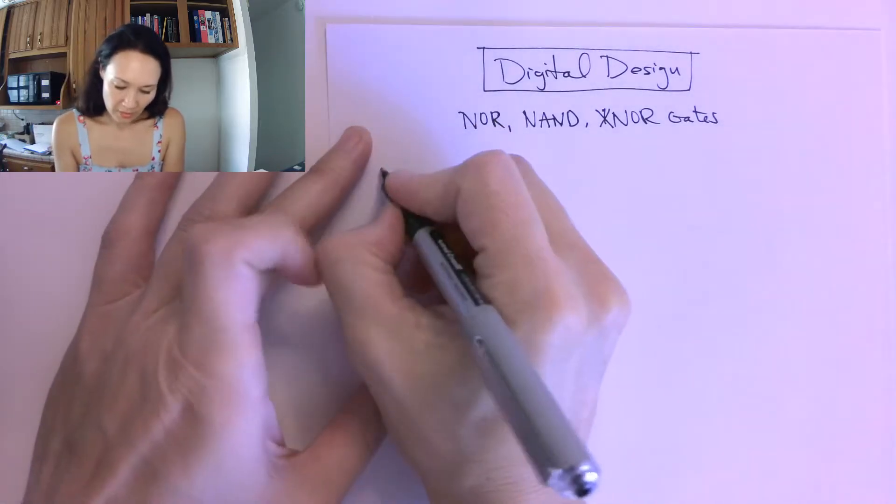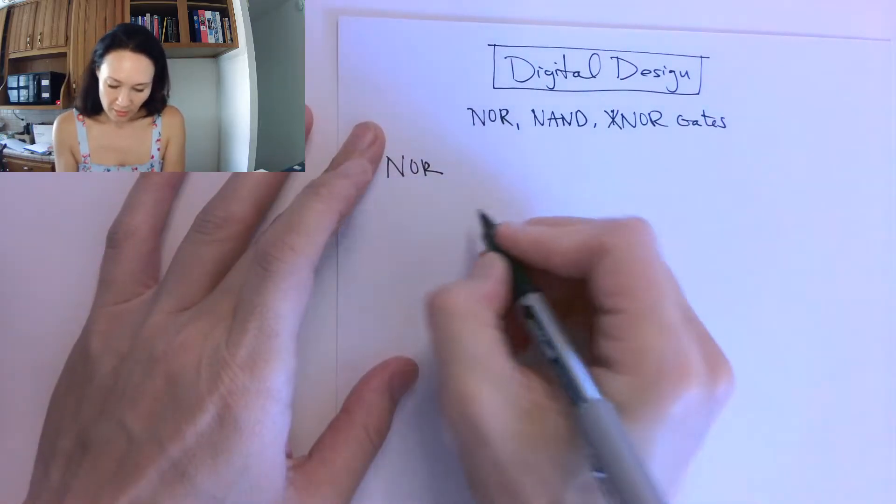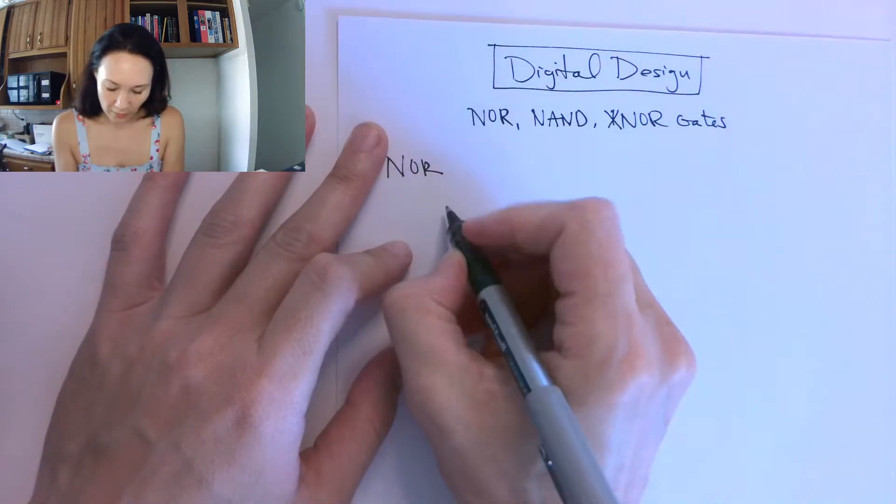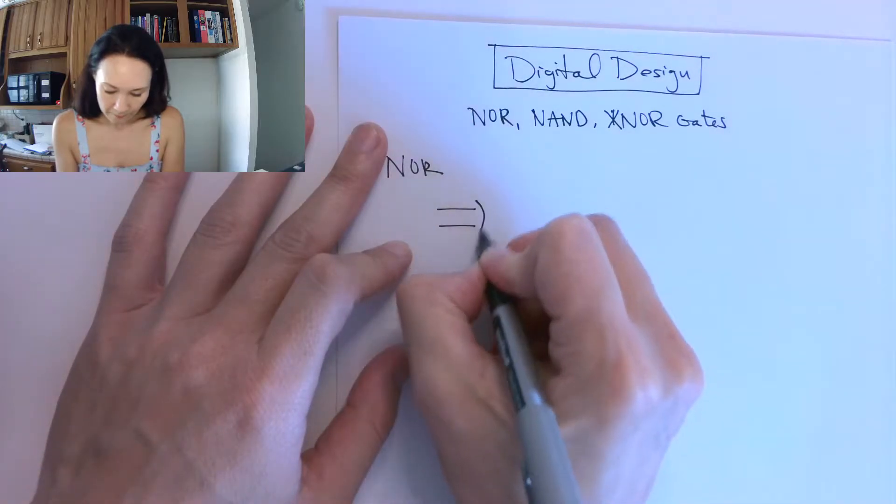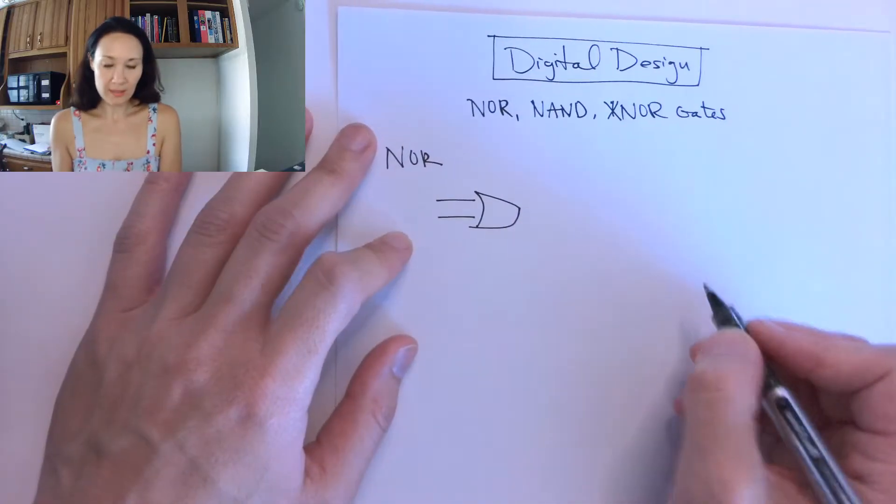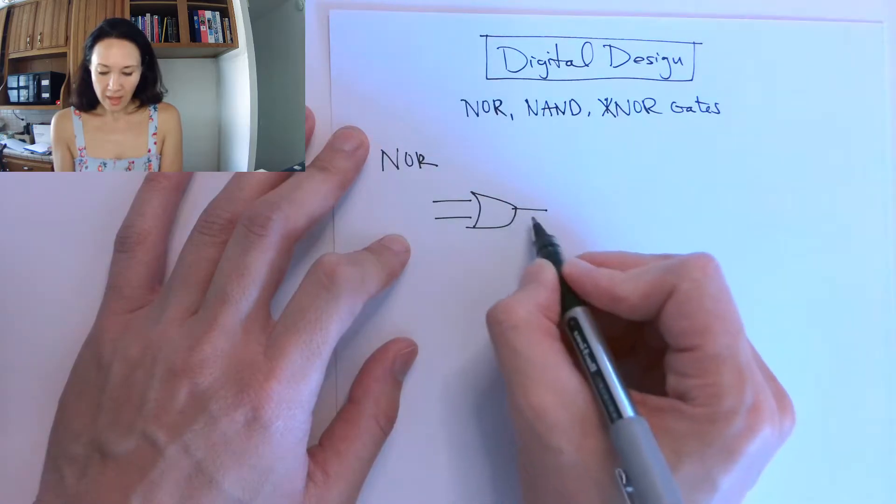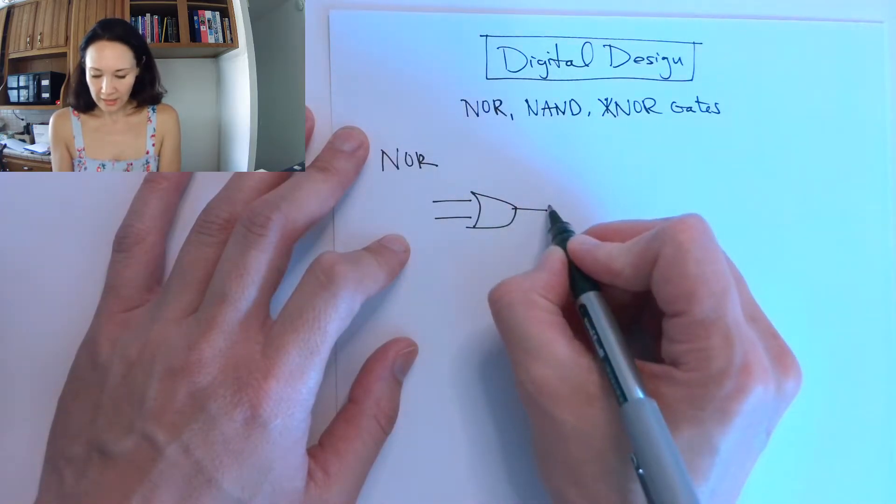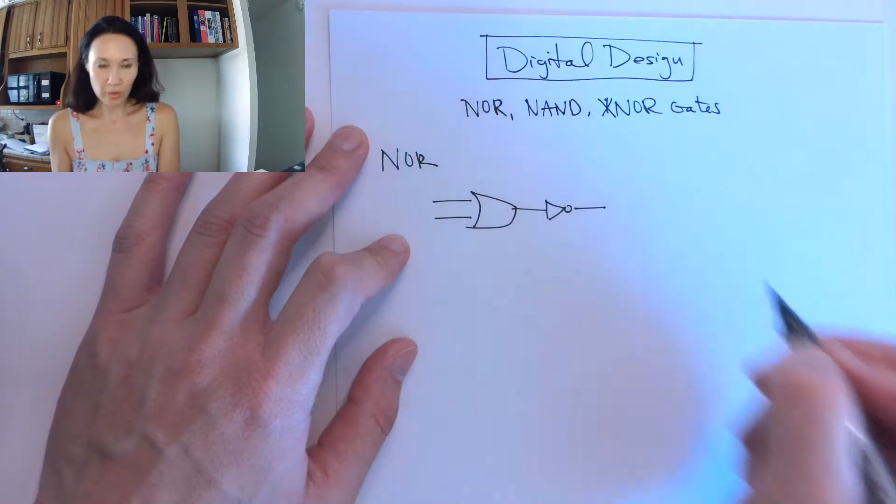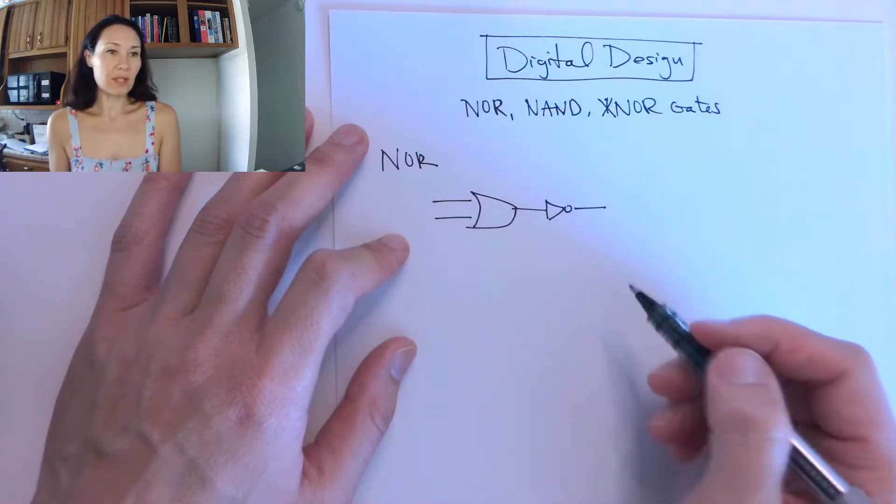Let me start with the NOR. If we have just a regular OR, here's an OR gate. After we get the output of the OR gate, if we invert the output, then we effectively have a NOR.